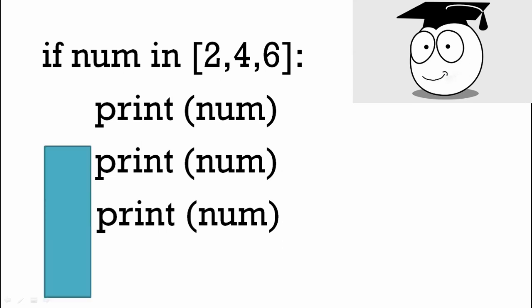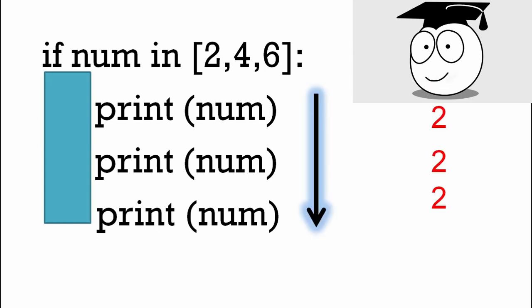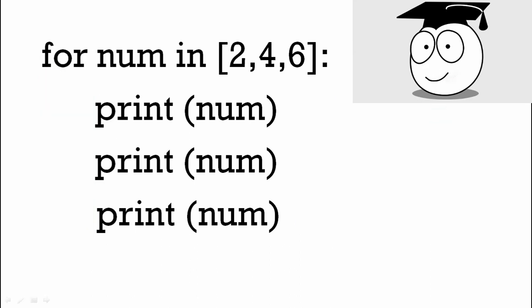There's three. So let's look at number two. It's going to go down and print two, two, two. What about a for loop? We've got the same numbers. We've got the same three print statements.